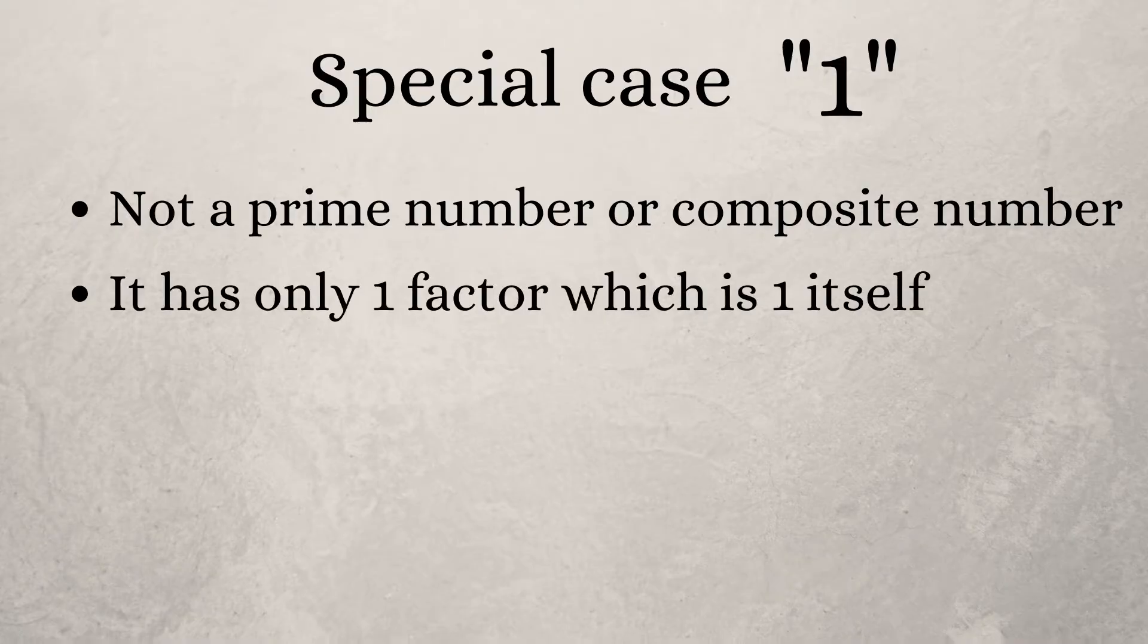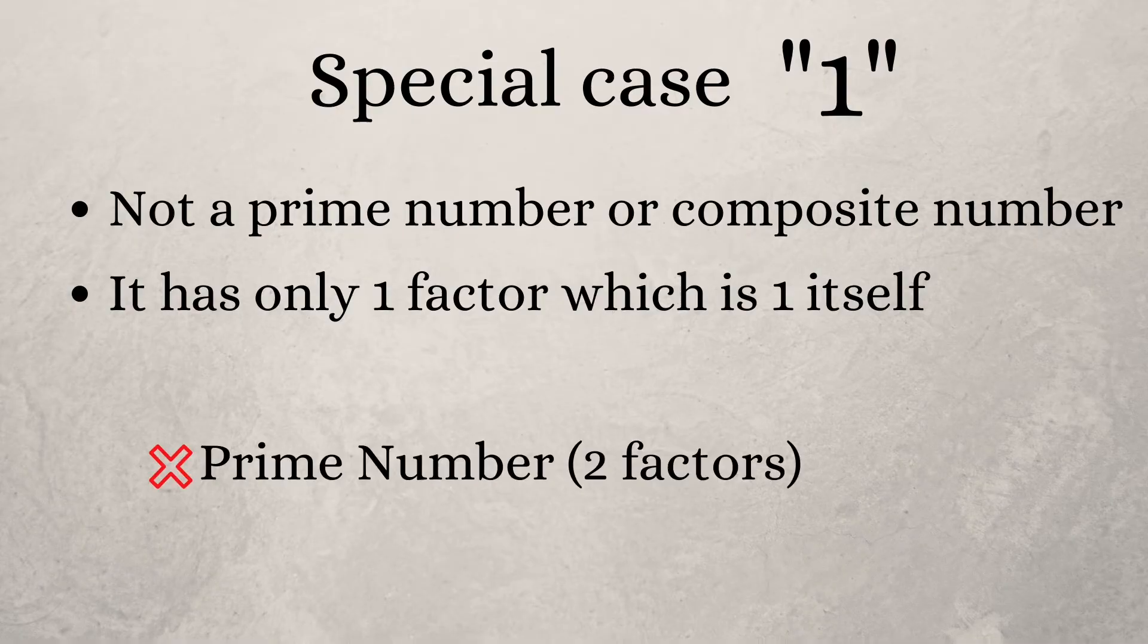Do you know why? Number one has only one factor, and that is one. So it cannot be a prime number which has two factors, nor a composite number which has more than two factors.